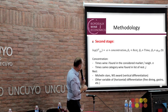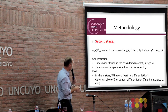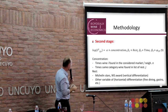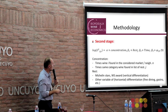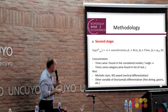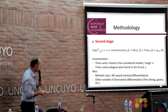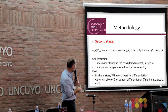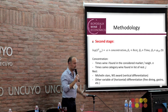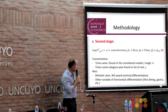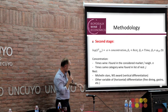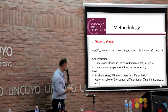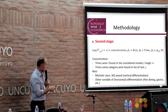In the second stage, the variables include concentration — which is the variable of interest — specifically the number of times a wine is found in the considered market, and the number of times the same category wine is found in the wine list of restaurant J. Other variables include restaurant ambience as a horizontal differentiation variable, and Michelin stars and Wine Spectator awards as vertical differentiation variables.